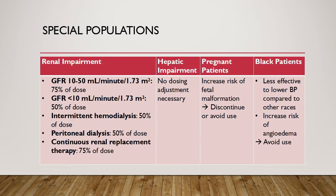Reduce and titrate the Captopril dose in 1 to 2-week intervals for patients with kidney impairment. If the eGFR is between 10 to 50 mL/min, or the patient is on continuous renal replacement therapy, Captopril should be given at about 75% of the normal dose. If the eGFR is less than 10 or the patient is on dialysis, the dose should be decreased by half. There is no dosing adjustment required for patients with hepatic impairment.